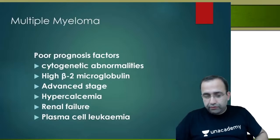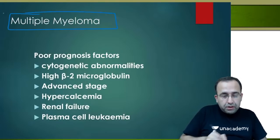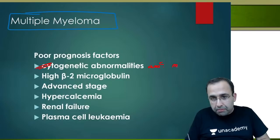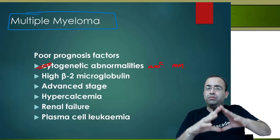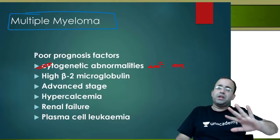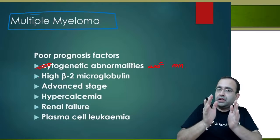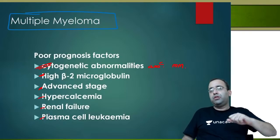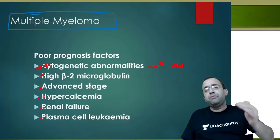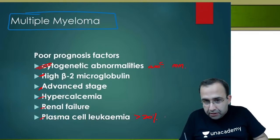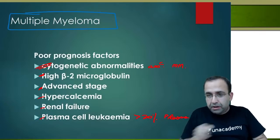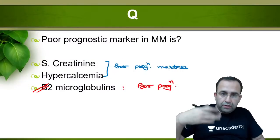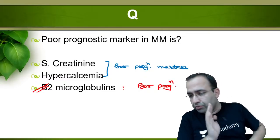For the next paper: cytogenetic abnormalities associated with multiple myeloma are important prognostic markers. Poor prognostic markers in sequence: high beta-2 microglobulin, advanced stage, hypercalcemia, renal failure, and plasma cell leukemia. Presence of more than 20 plasma cells in peripheral smear makes it plasma cell leukemia. The best poor prognostic marker in multiple myeloma is beta-2 microglobulin.